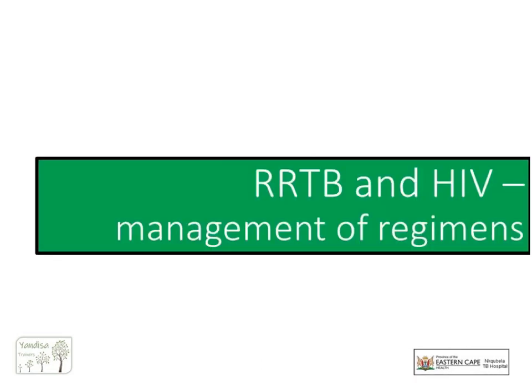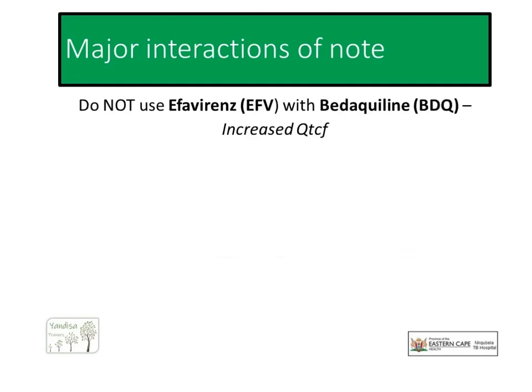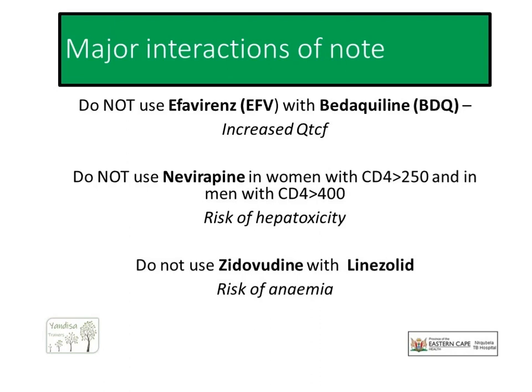Let us take a closer look at our regimen options for patients who have both RR-TB and HIV. The challenge with prescribing ARVs to our HIV patients involves several significant drug interactions. The most problematic is the interaction between efavirenz and bedaquiline — all patients on efavirenz must be switched for the duration of bedaquiline treatment. We could replace efavirenz with nevirapine, but this is problematic in patients with higher CD4 counts. It is also recommended to avoid using stavudine and linezolid together as they can both cause bone marrow suppression.